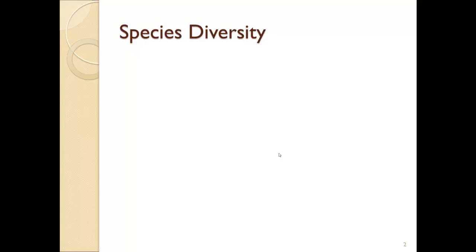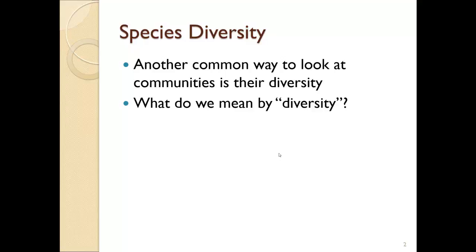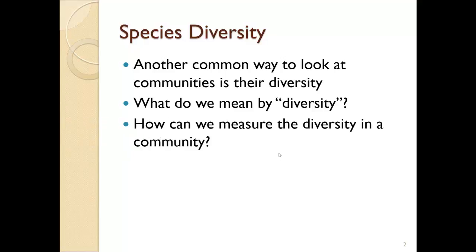What I want to do is talk to you very briefly about one way to measure species diversity and then show you how we calculate that in Excel. This is a common way to look at communities. What do we mean by diversity? We just mean how many different individuals and how many different species are in that community. There are lots of different ways to measure this — they all have their strengths — and I'm going to show you the one that I like the best.